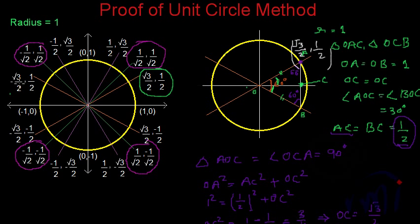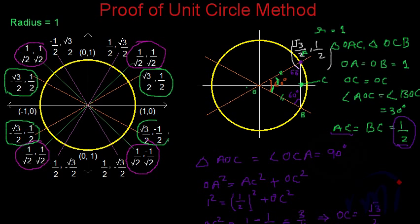Reflecting this point, the x value becomes negative and y stays positive, giving the values of cos 150 and sin 150. In the third quadrant both x and y are negative, so both sin and cos are negative. In the fourth quadrant x is positive and y is negative, so cos is positive and sin is negative. This completes the proof for the values of cos 30 and sin 30.